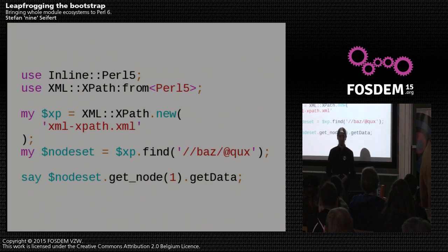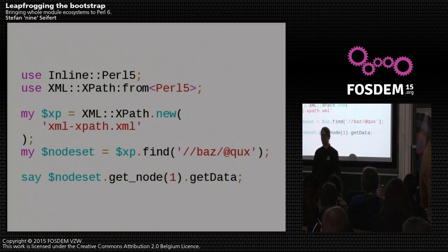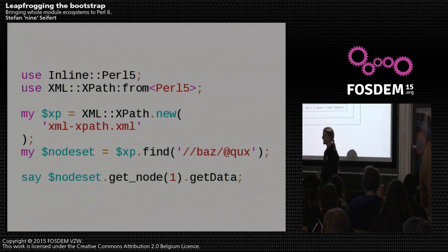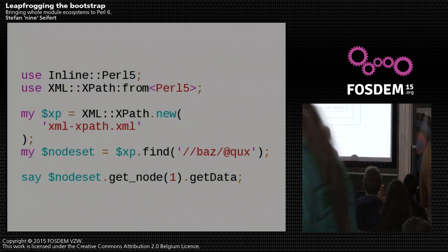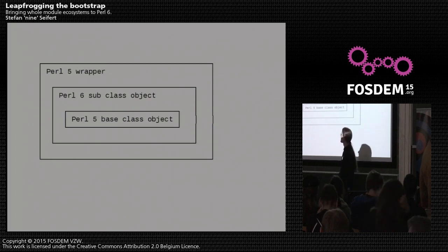But some modules require you to actually subclass them to use them. So how do we subclass a Perl 5 class in Perl 6? Inline::Perl5 provides a Perl5::Parent role. By consuming this role, you tell Inline::Perl5 that your Perl 6 class should act like a subclass of a Perl 5 class.